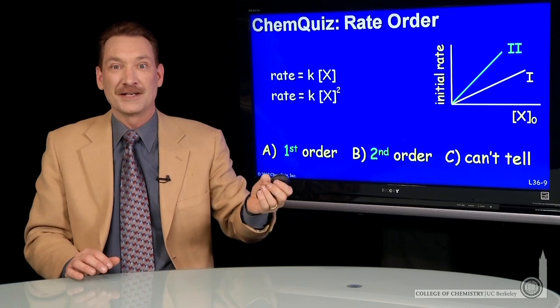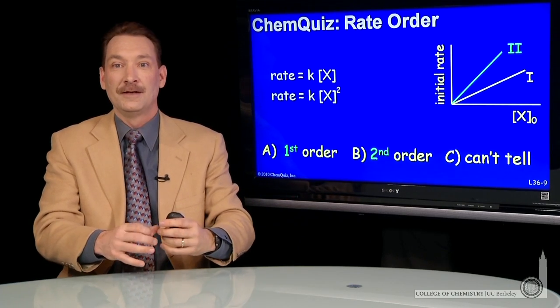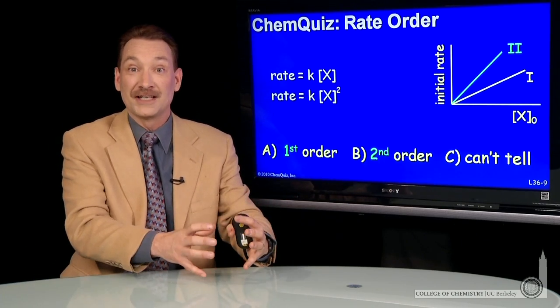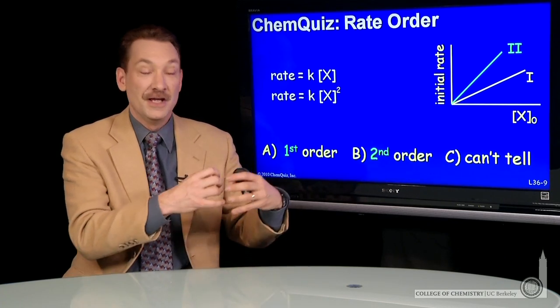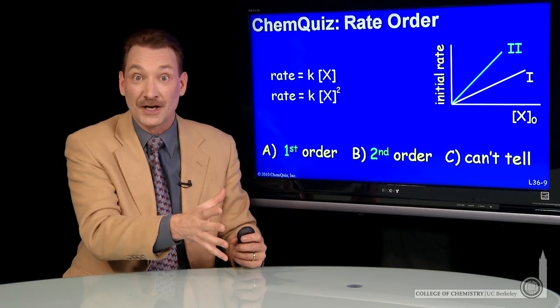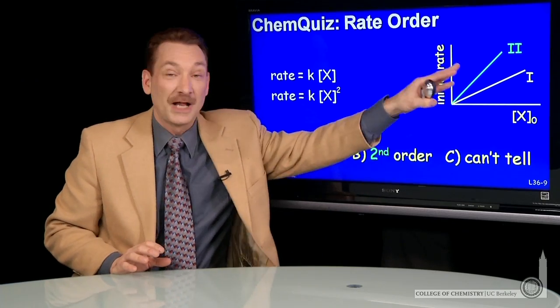So how would you do that experiment? You'd set up the reaction, you'd measure the rate. Then you'd set up the reaction again at a different initial concentration and measure the initial rate. Then you'd set up the reaction again at a different initial concentration, measure the rate, and you would plot those out.